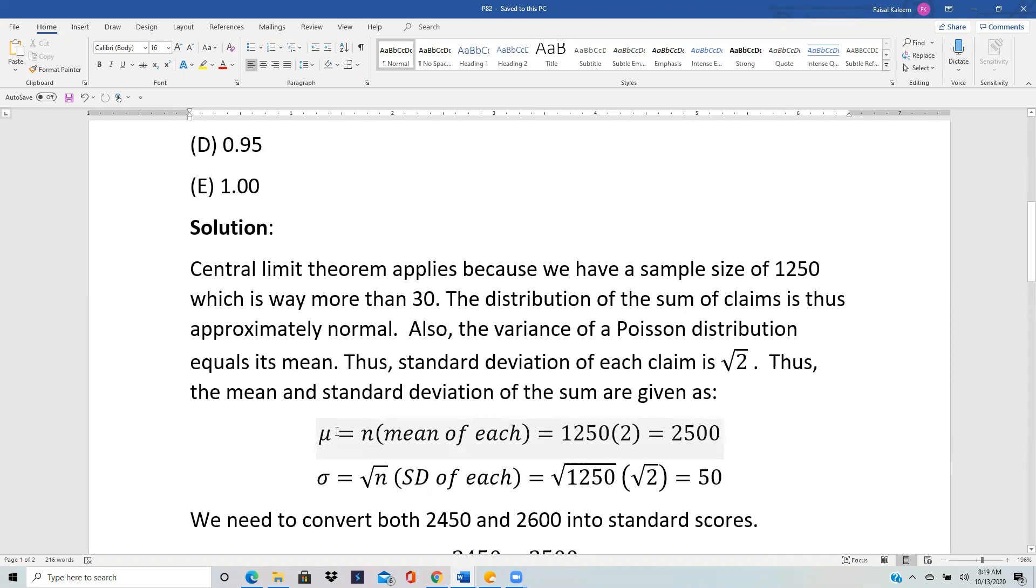So the mean of the sum will be the sum of all of the means, which means 1250 times the mean of each. So that would be 2500. And then the standard deviation is square root n times square root of 2. That gives 50.